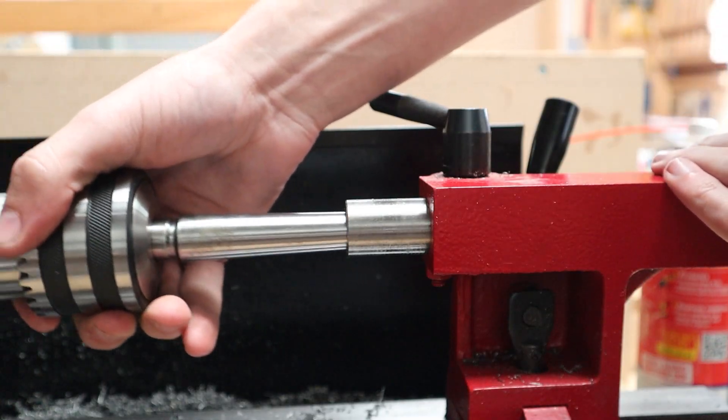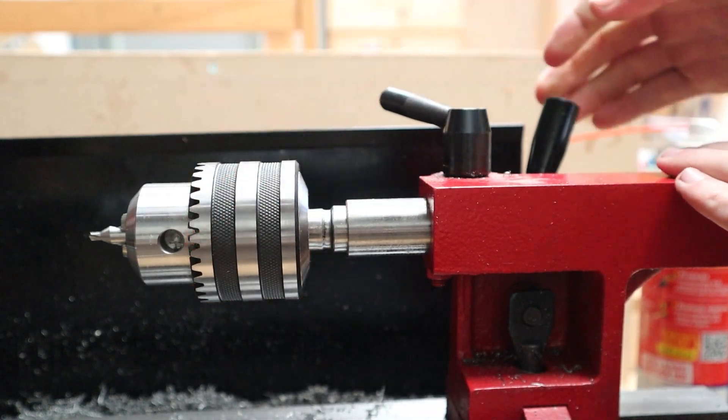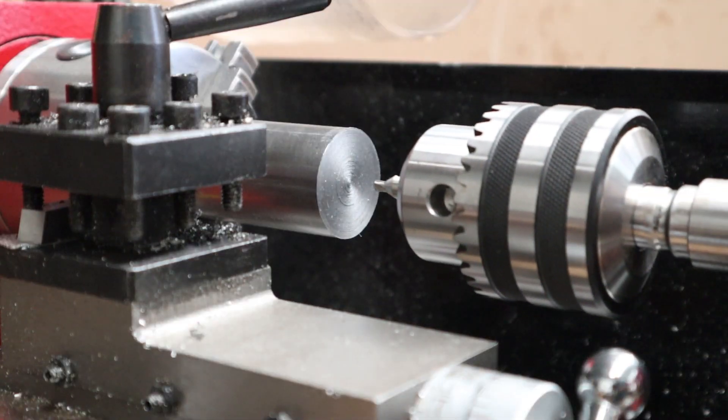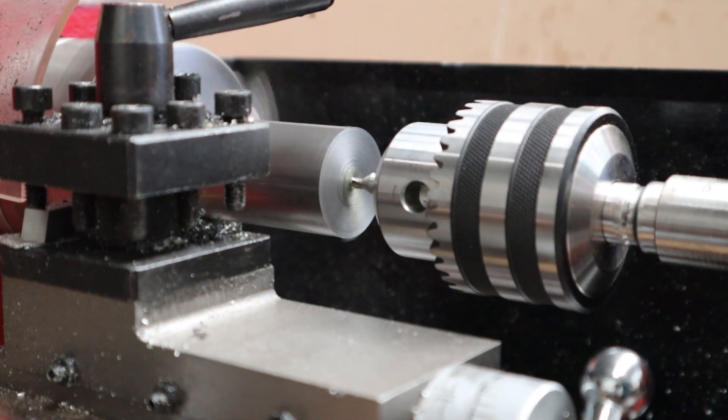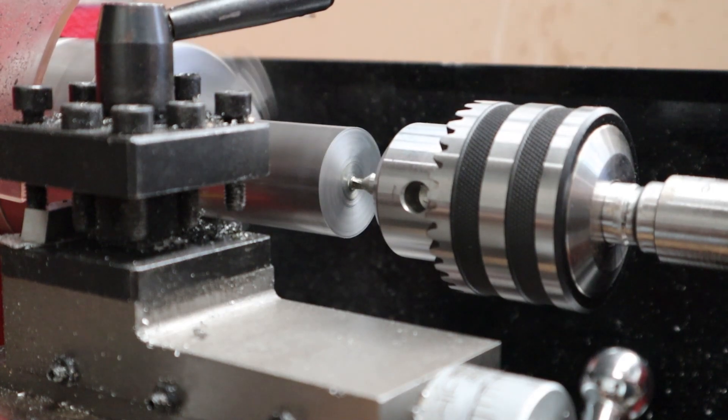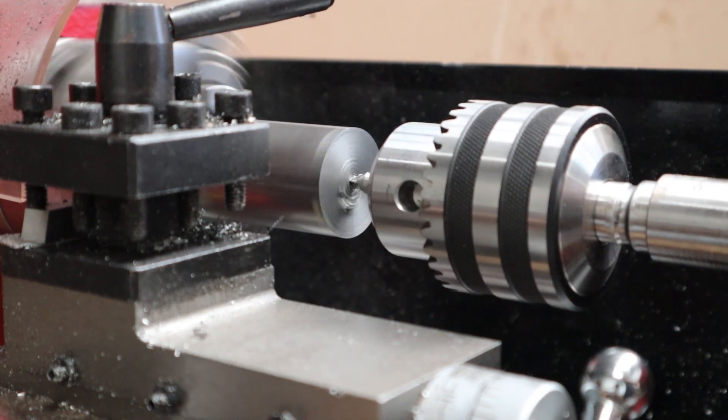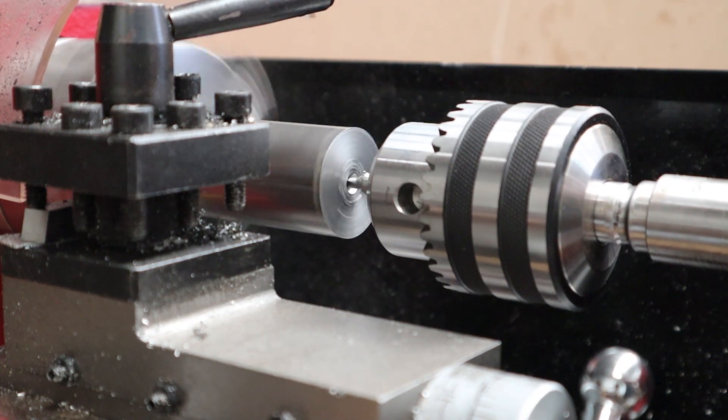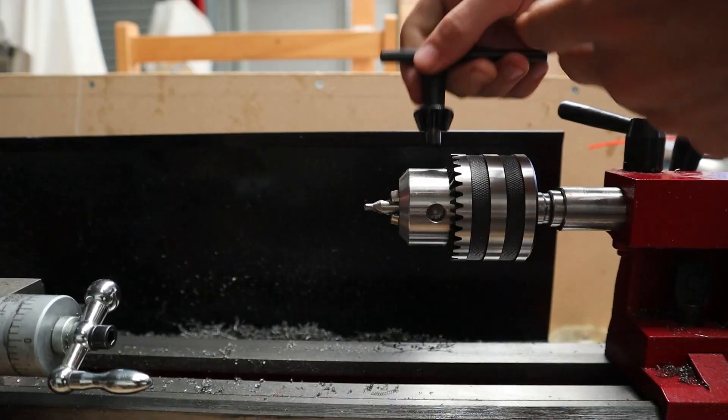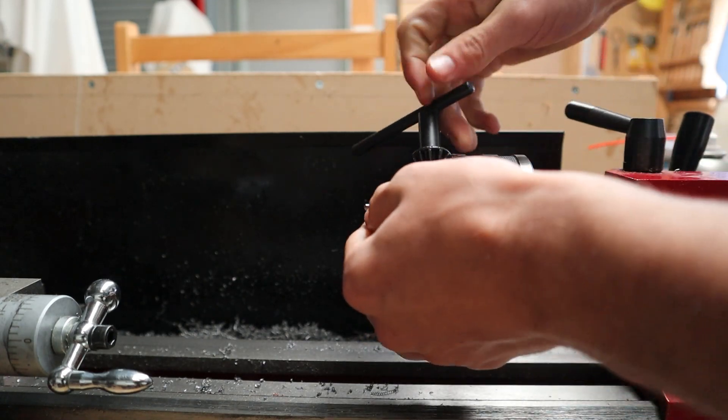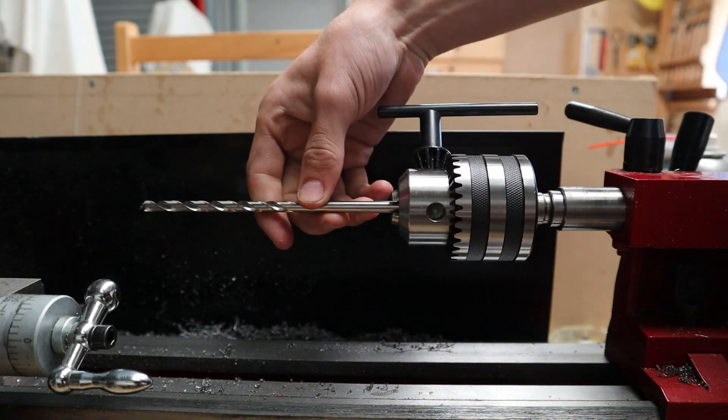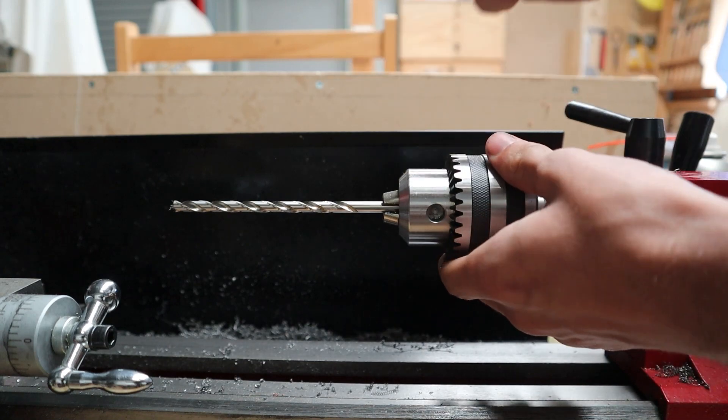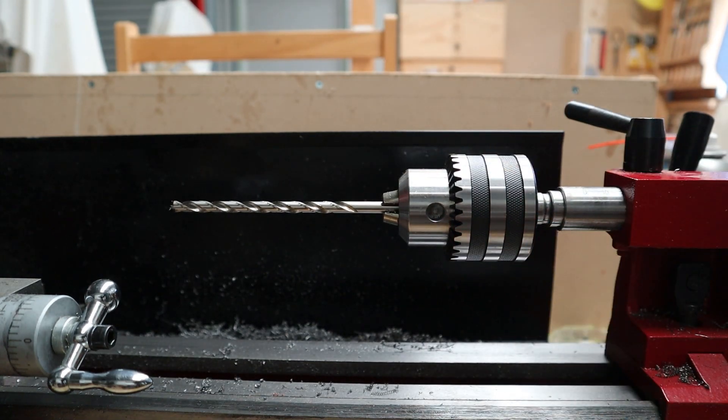Moving over to the tailstock, I can take the dead point out and smash in the drill chuck with the pilot hole bit in. Once the pilot hole is drilled, I can put a long series drill bit in and send it through the whole part, making sure to clear out the chips often.